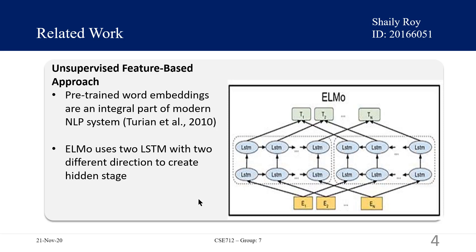According to Turian, pre-trained word embeddings are an integral part of modern NLP systems, offering significant improvement over embeddings learned from scratch. They proposed ELMo — Embeddings from Language Models — which generalized traditional word embedding research along a different dimension. They extract context-sensitive features from left-to-right and right-to-left language models using two LSTMs. The contextual representation of each token is the concatenation of the left-to-right and right-to-left representations. This is not purely bidirectional, but follows a left-to-right and right-to-left approach.